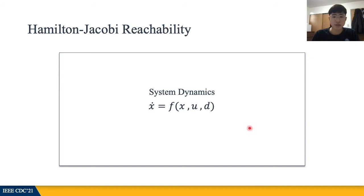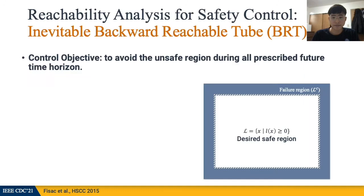As a basic setup, we use F as the vector fields for the system dynamics, X as the system state, U as the control input, and D as the disturbance that can be applied to the system adversarially. We assume that U and D are both bounded. In the Hamilton-Jacobi reachability framework, safety control can be translated into a reachability problem whose objective can be described as optimal control. In this diagram, we denote large L as our desired safety region, which is the white space in the center, and the blue region as the failure region. We can use a signed distance function, small l(x), to represent the safe set as its zero-superlevel set.